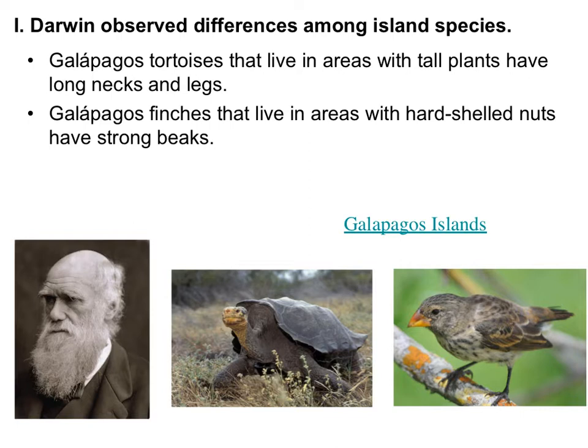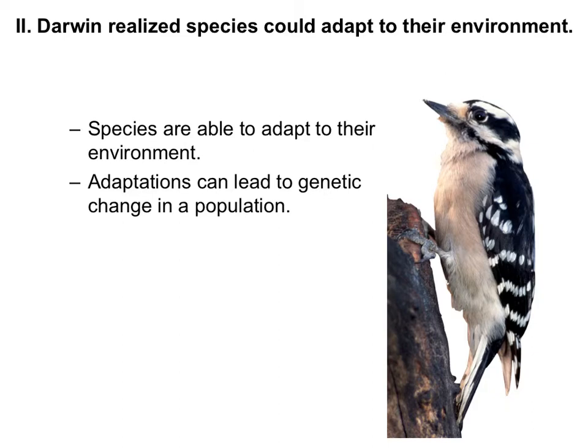First, there were two organisms on the Galapagos Islands that Darwin noticed looked different from one island to another. The Galapagos tortoises that lived in areas with taller plants had longer necks and legs, while those in areas with shorter plants had shorter necks and legs. He also noted that finches living in areas with hard shells had stronger beaks, while those who ate fruit had smaller, softer beaks — suggesting species were designed for the environment they lived in.